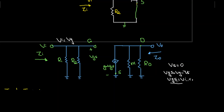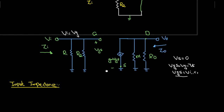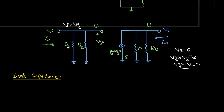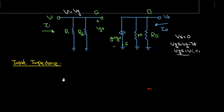To find the input impedance, we can see that it will equal the parallel combination of R1 and R2. So the input impedance Zi equals R1 parallel R2. This is equation number one.